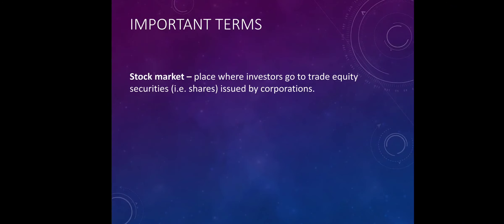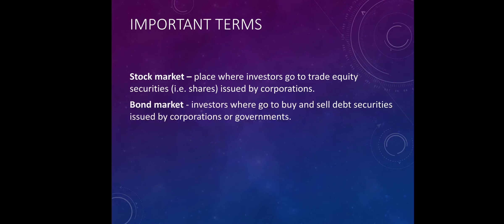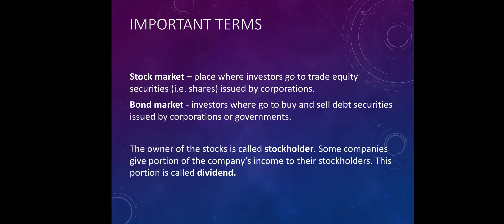Here are some important terms to remember. The stock market is a place where investors go to trade equity resources or securities, for example shares in stocks issued by corporations. We also have the bond market, where they go to buy and sell securities or bonds. The owner of the stocks is called a stockholder. The owner of the bond is called a bondholder. Some companies give a portion of the company's income to their stockholders, and you call this portion the dividend.